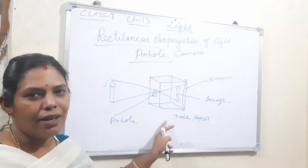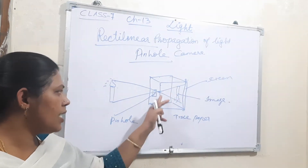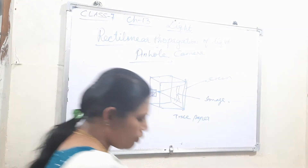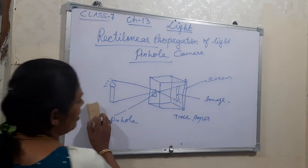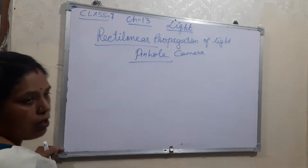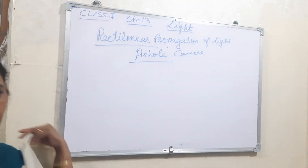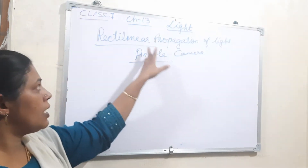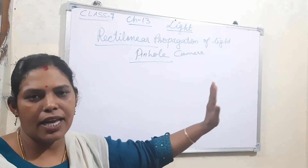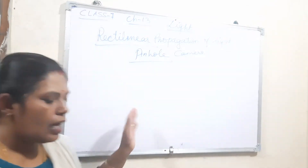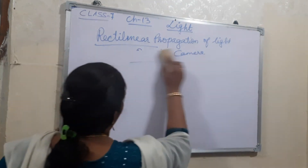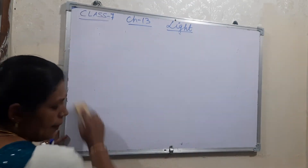This is the pinhole camera — the image is formed through the pinhole, and this works on the principle of rectilinear propagation of light, meaning light travels in a straight line. Now I will explain about the ray and the beam. A ray is a straight line moving with an arrowhead.